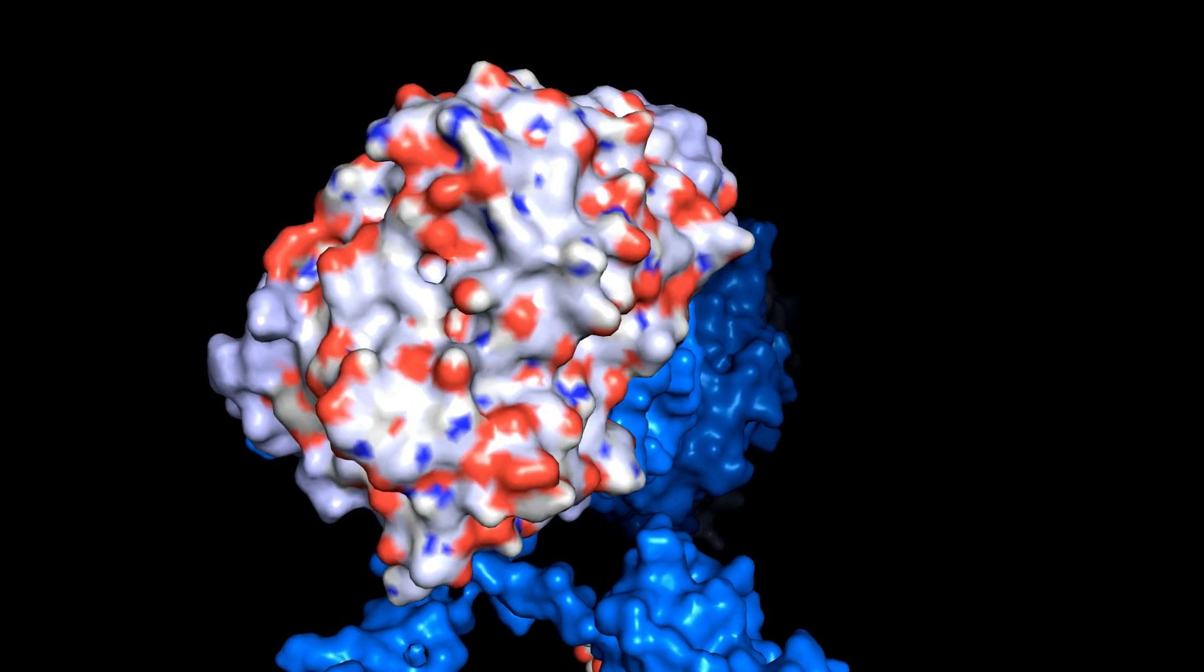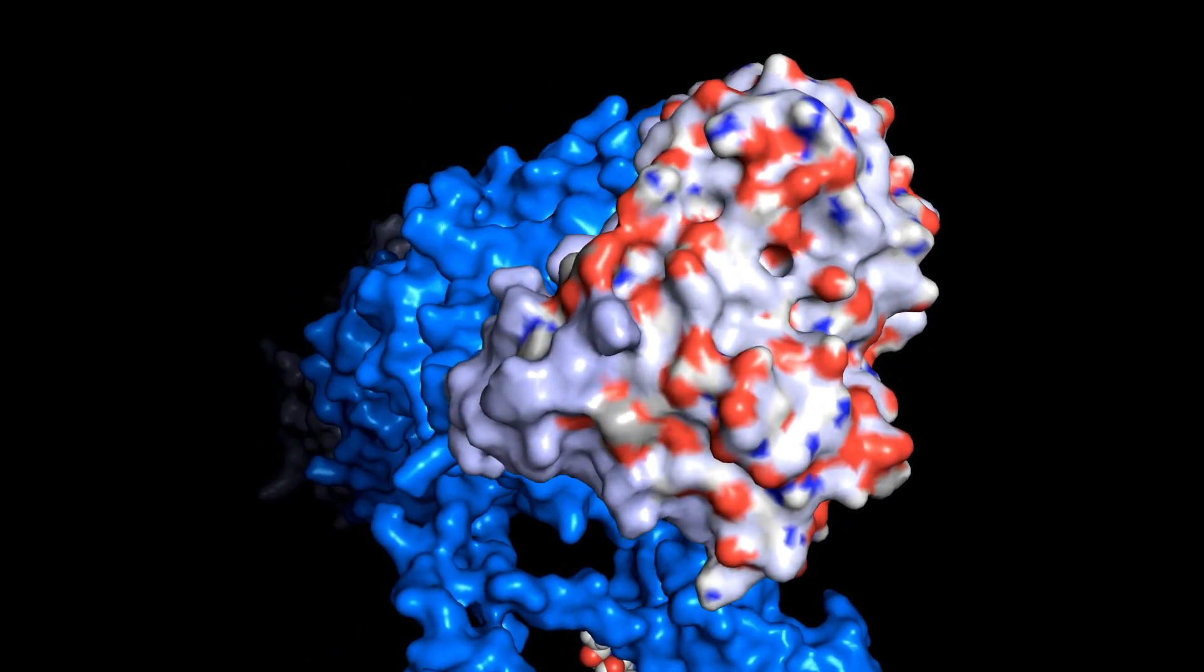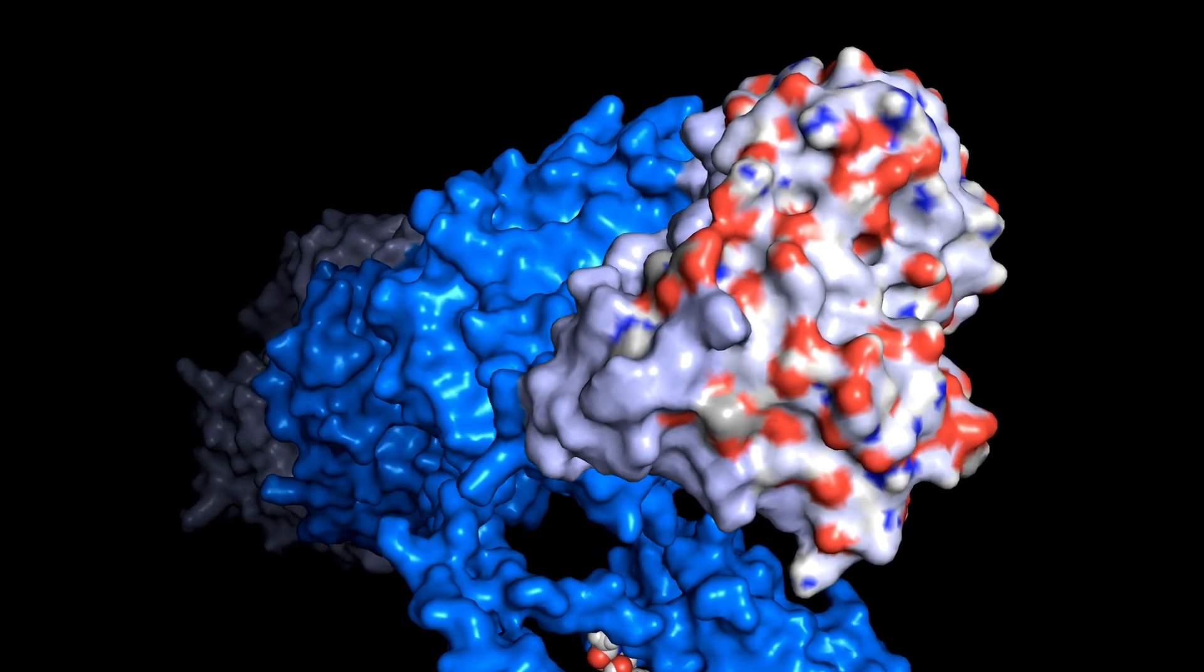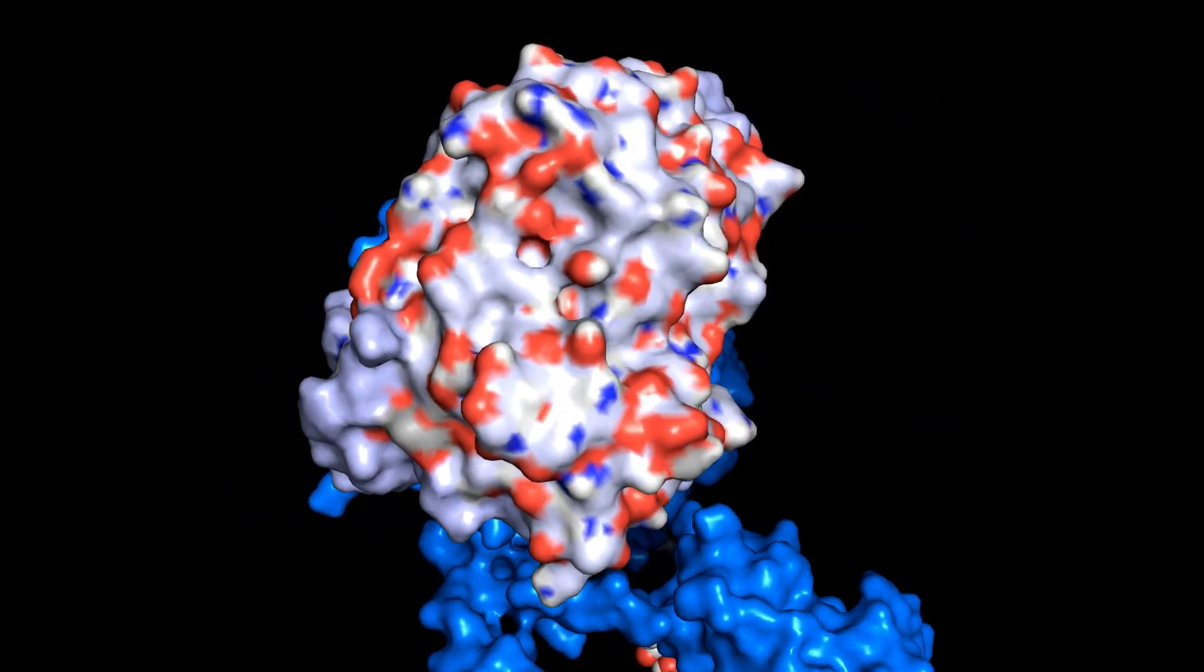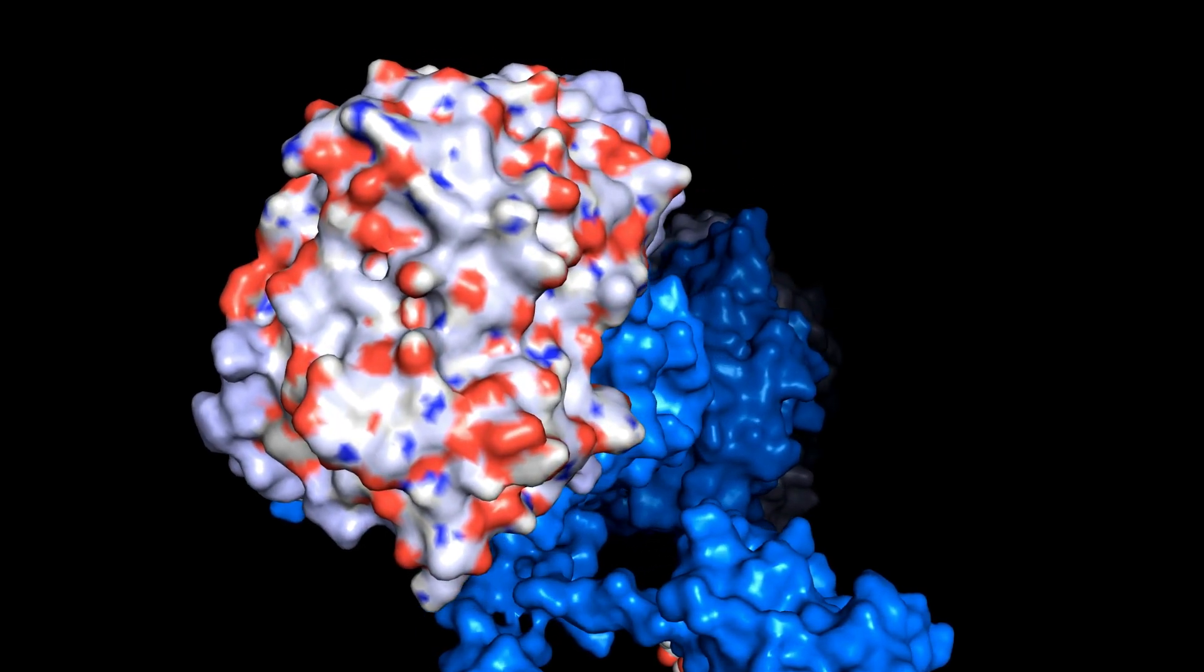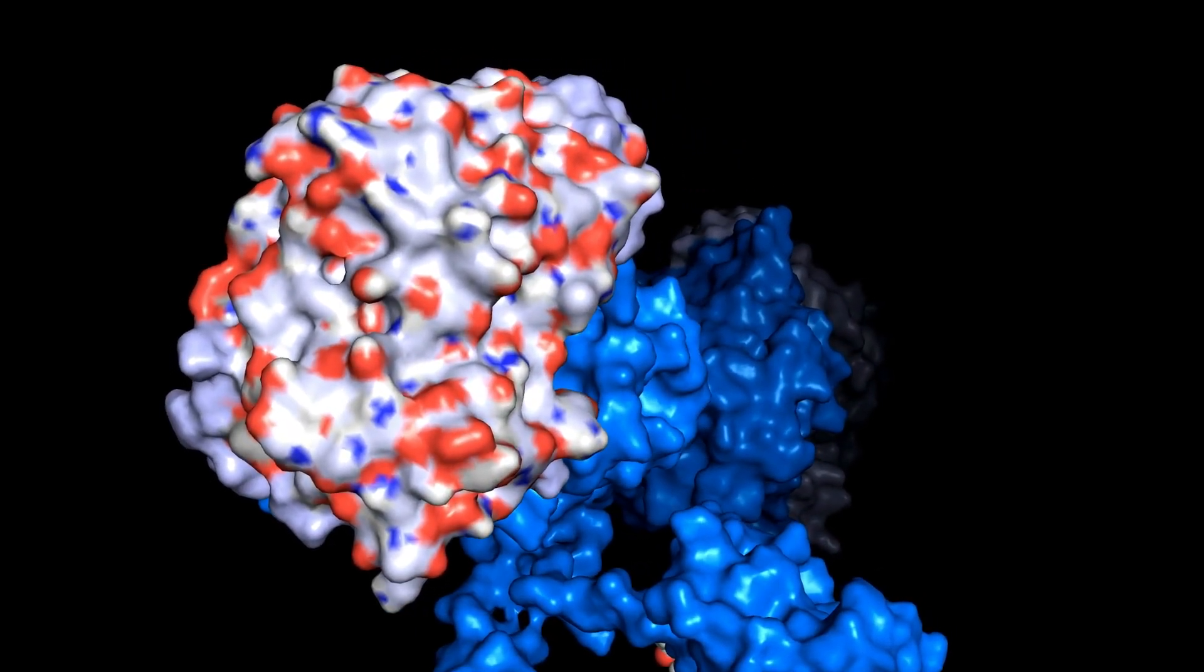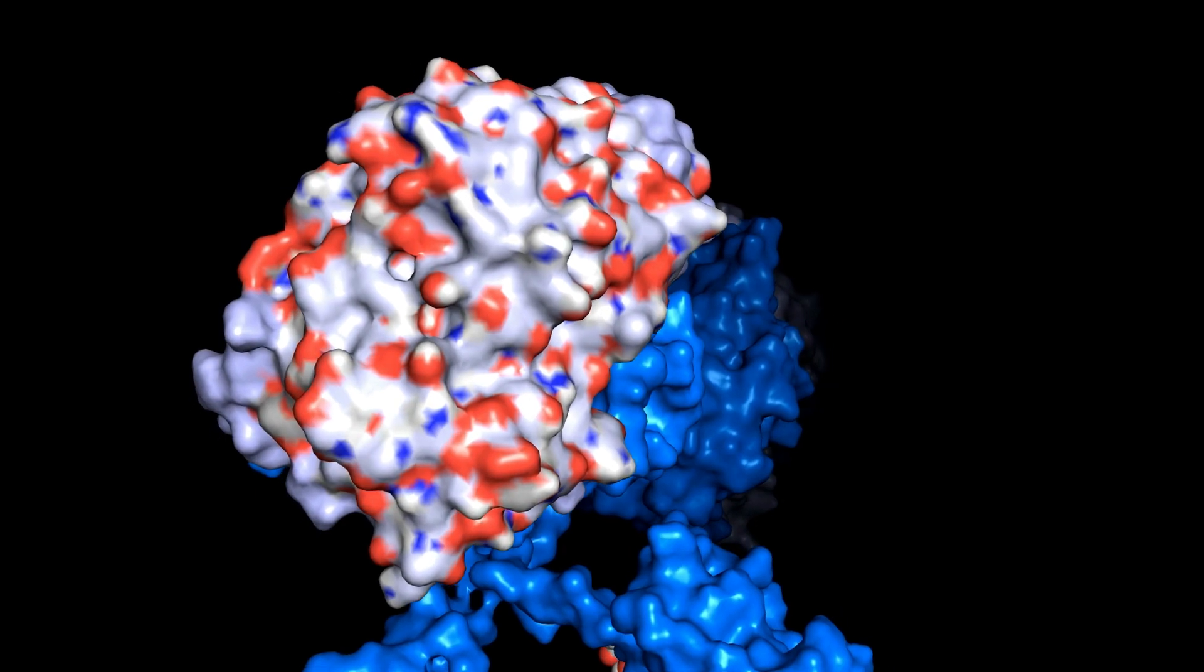This produces many different amino acid sequences in this region here, called the variable domain. Each B cell, therefore, produces a unique antibody. But all antibodies produced by that specific B cell are the same.